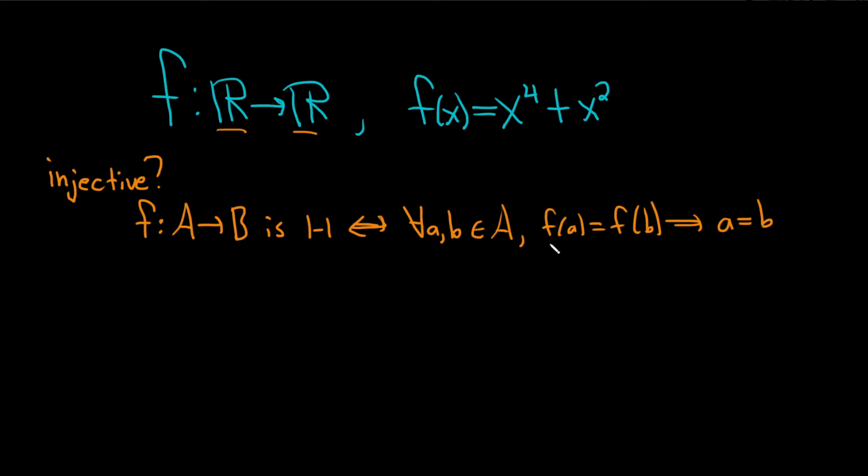So whenever the outputs are the same, the inputs are also the same. So we have to think about this when we look at a problem like this. You have even exponents, and that kind of indicates that you can have a situation with the outputs being the same and the inputs being different, which would violate the definition.